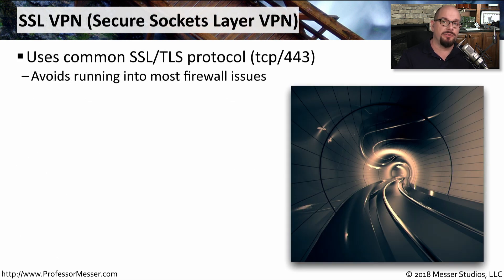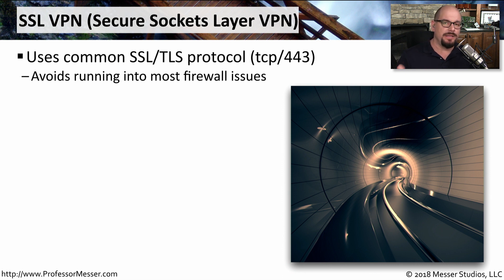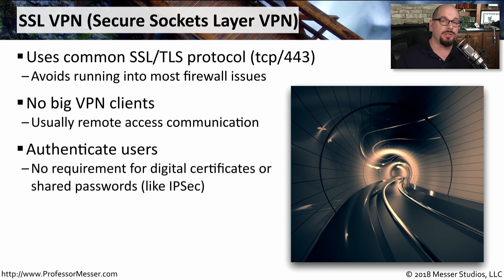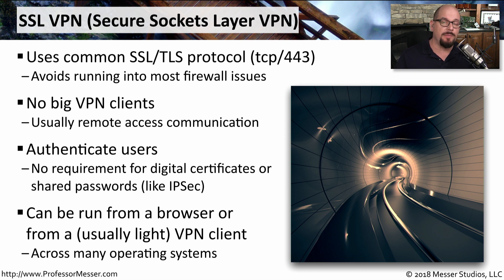Another VPN type commonly used for end-user access is an SSL VPN. SSL, or Secure Sockets Layer, uses encryption over TCP port 443. Since SSL is such a common protocol, most firewalls allow this traffic to pass without any additional configuration. SSL VPN clients are often built into your operating system — they're thin clients and usually don't require a lot of resources. SSL VPNs can also use a simple username and password to authenticate users, with no requirement to set up shared passwords or digital certificates like you might see with IPsec.